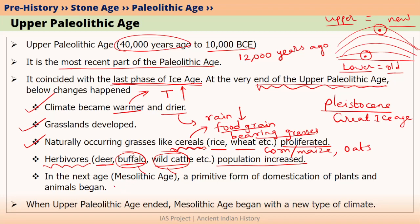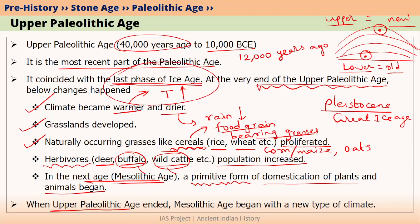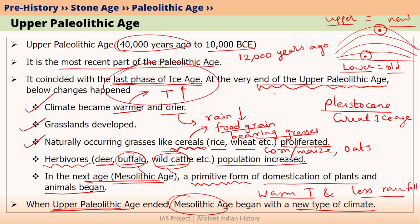Once the Upper Paleolithic ended, the next stage was the Mesolithic Age. During the Mesolithic Age, a very primitive form of domestication of animals as well as cultivation of plants began. In the Upper Paleolithic Age, it was basically the last phase of Ice Age. The Mesolithic Age featured a new type of climate — warm temperatures and less rainfall, also called warm and dry climate.